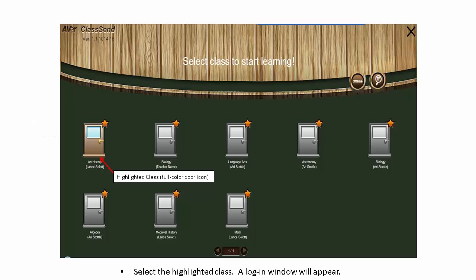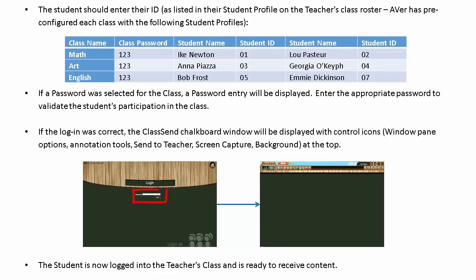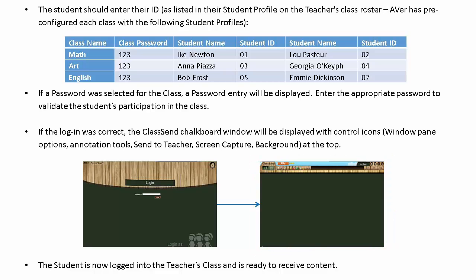Select the highlighted class and a login window will appear. The student will now need to enter their ID. If a password was selected for the class, a password entry will be displayed. Enter the appropriate password to validate the student's participation in the class. If the login was correct, the Class Send chalkboard window will be displayed with control icons. The student is now logged into the teacher's class and is ready to receive content.